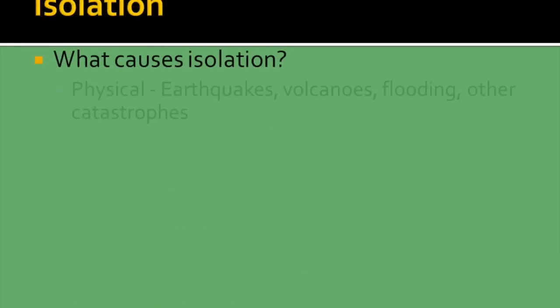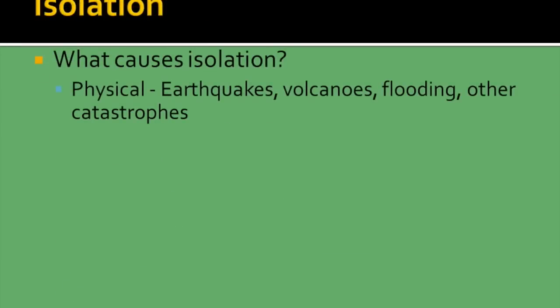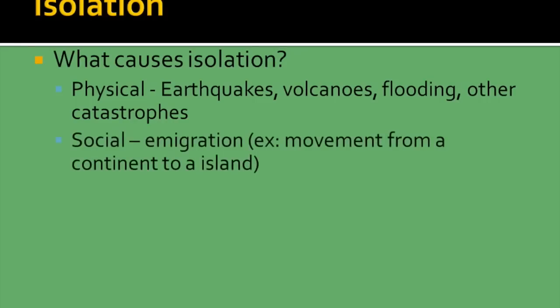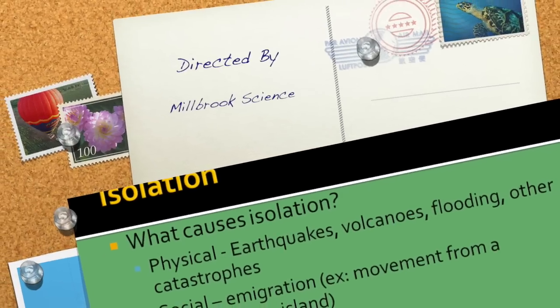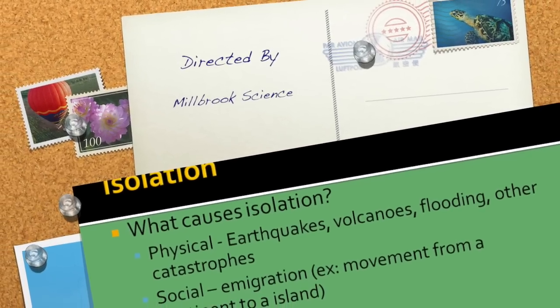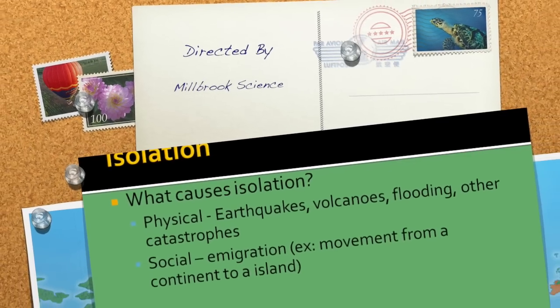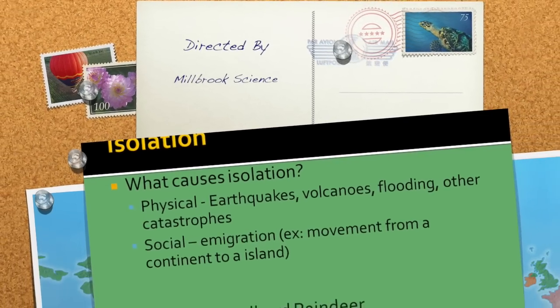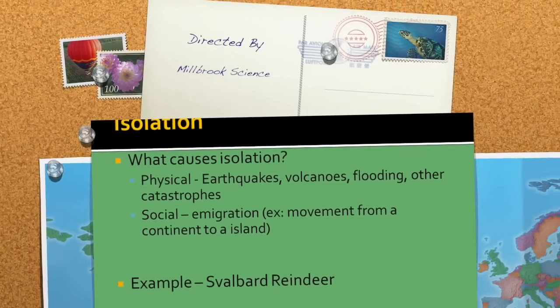Things that cause isolation include physical events here on Earth — earthquakes, volcanoes, flooding, catastrophes — any of those events that will potentially separate a population. There are also social causes, such as emigration, like the movement from a continent to an island.